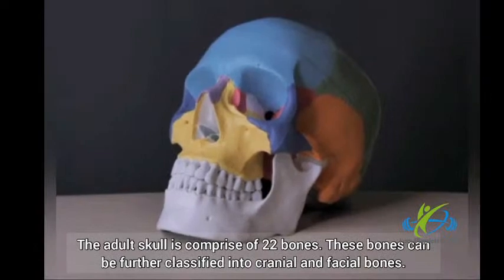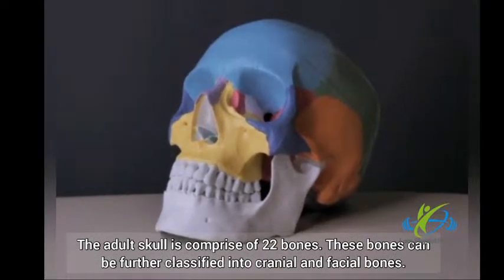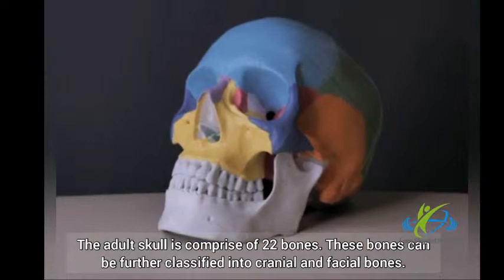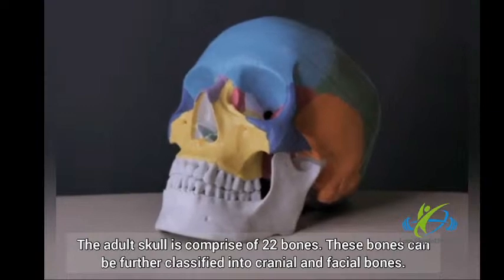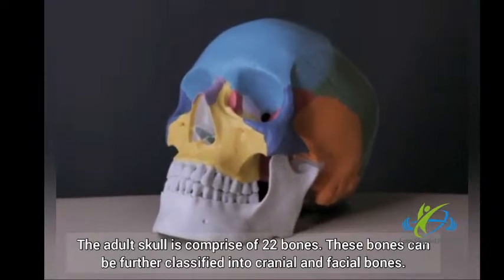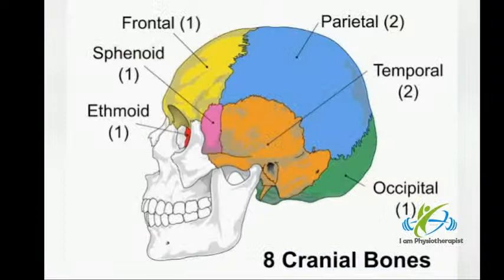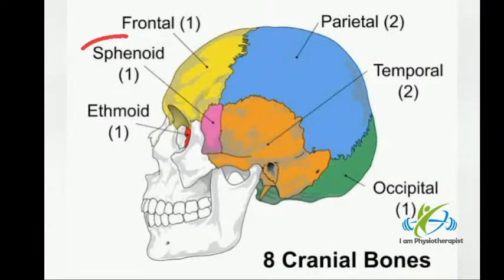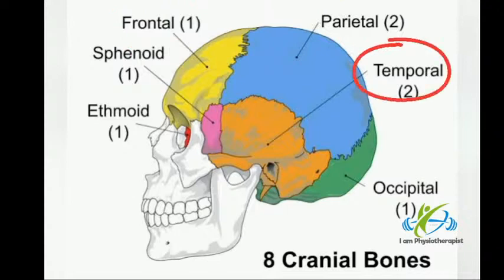The adult skull is comprised of 22 bones. These bones can be further classified into cranial and facial bones. There are eight cranial bones: Ethmoid, Sphenoid, Frontal bone, two Parietal bones, two Temporal bones, and Occipital bone.